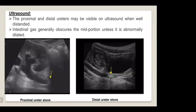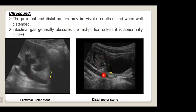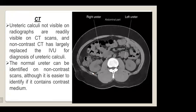On ultrasound, the proximal and distal ureter may be visible when well distended; intestinal gas generally obscures the mid portion unless it is abnormally dilated. On CT, ureteric calculi not visible on plain radiographs are readily visible, and non-contrast CT has largely replaced IVU for diagnosis of ureteric calculi.